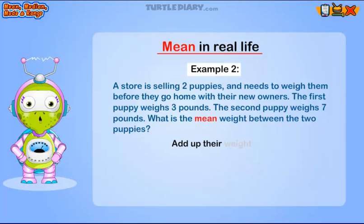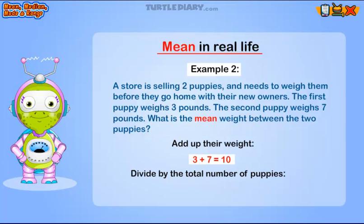Add up their weight. Three plus seven equals ten. Divide by the total number of puppies. Ten divided by two equals five. The puppies in this store have a mean weight of five pounds.